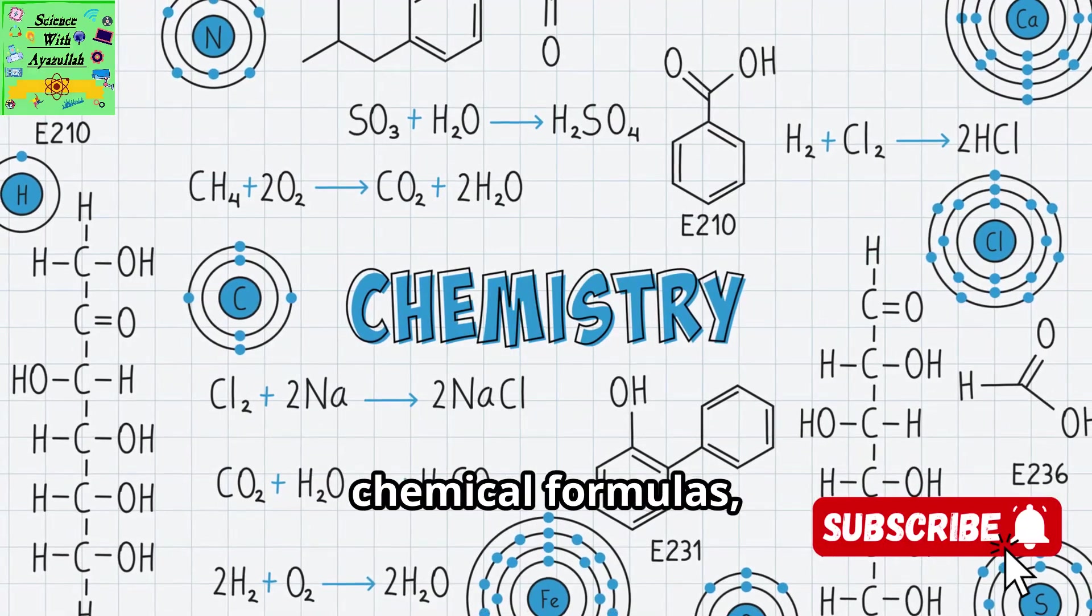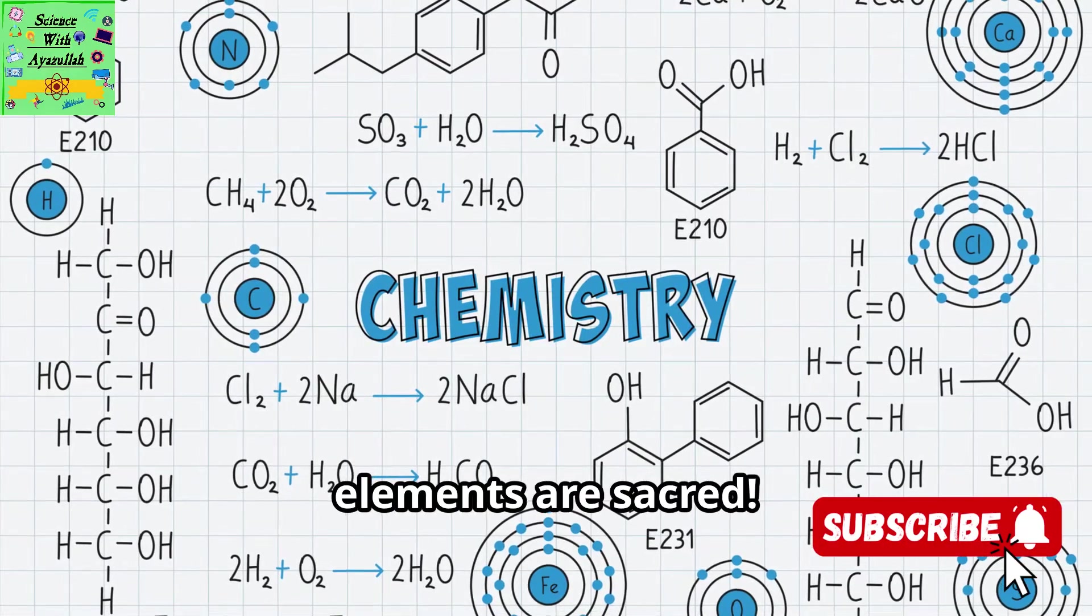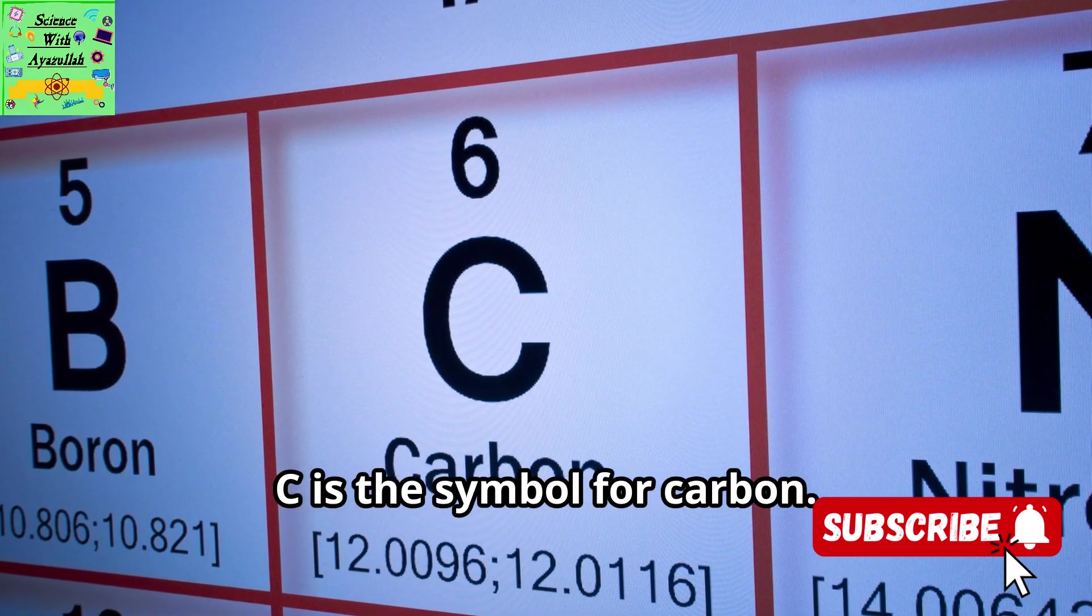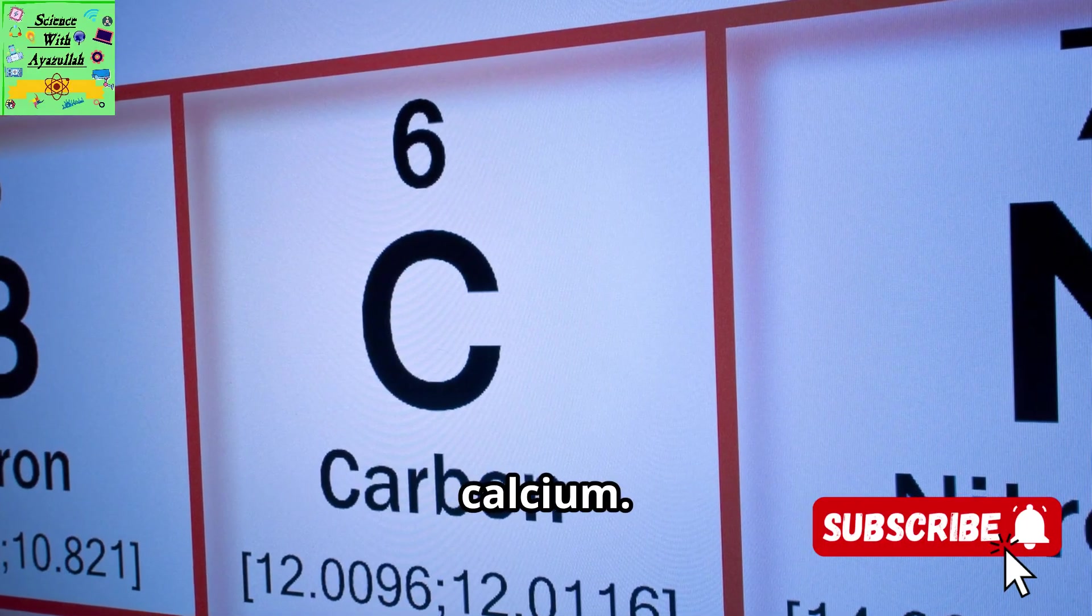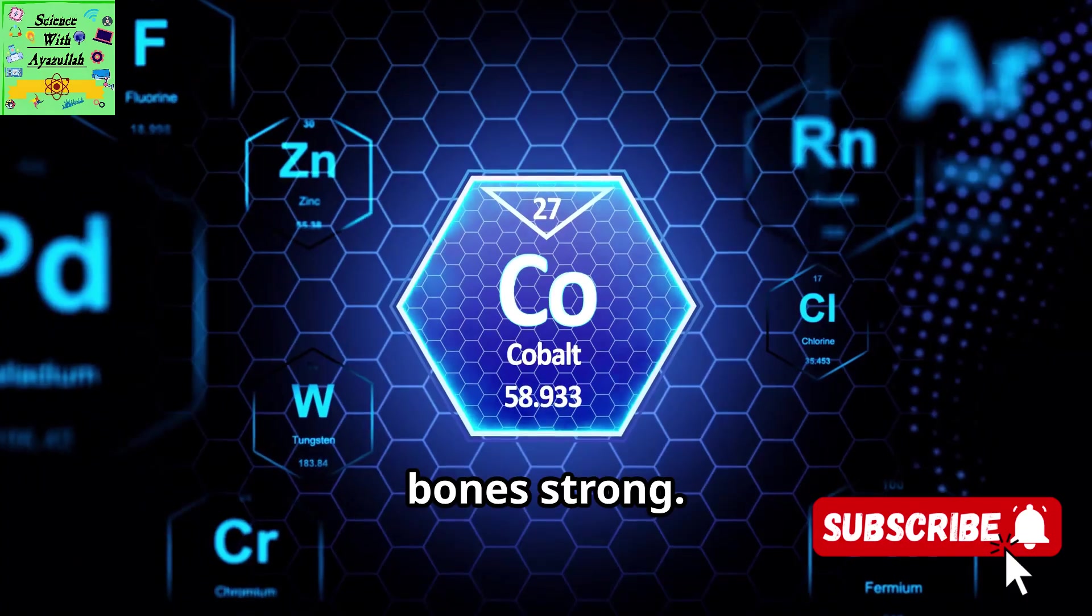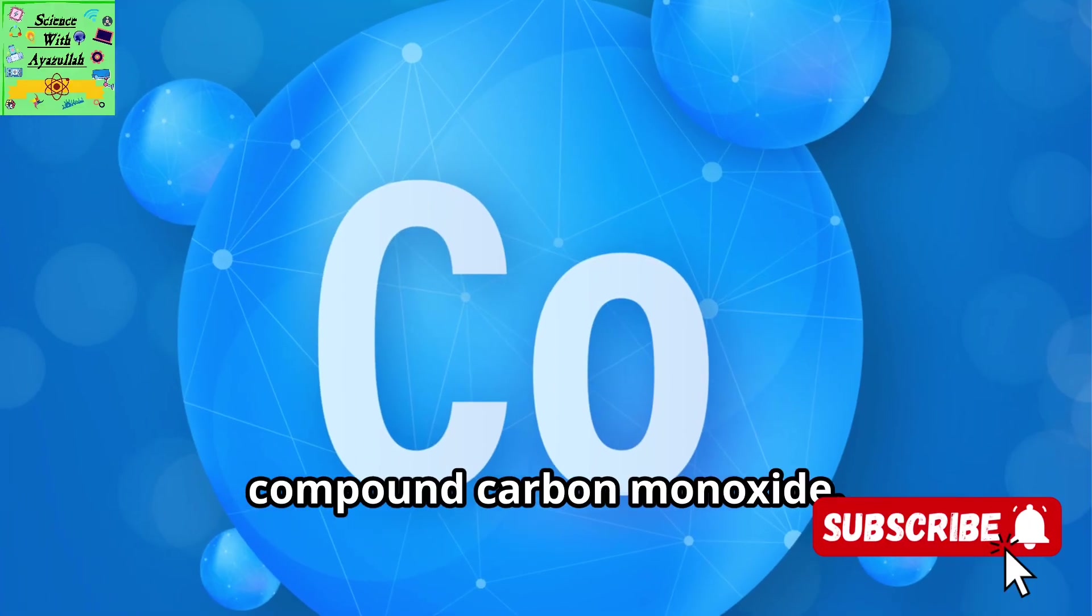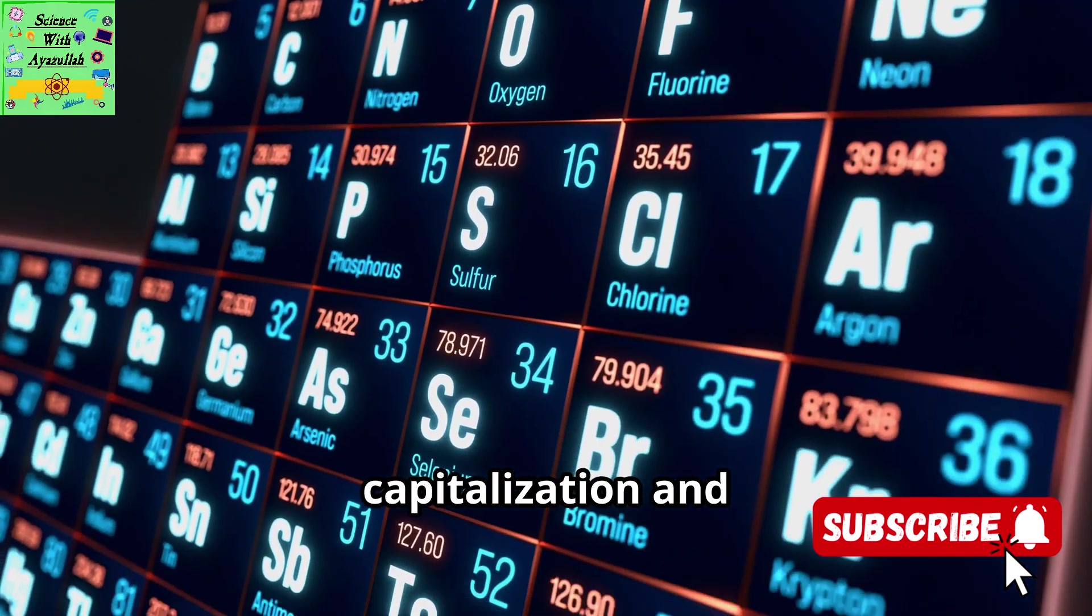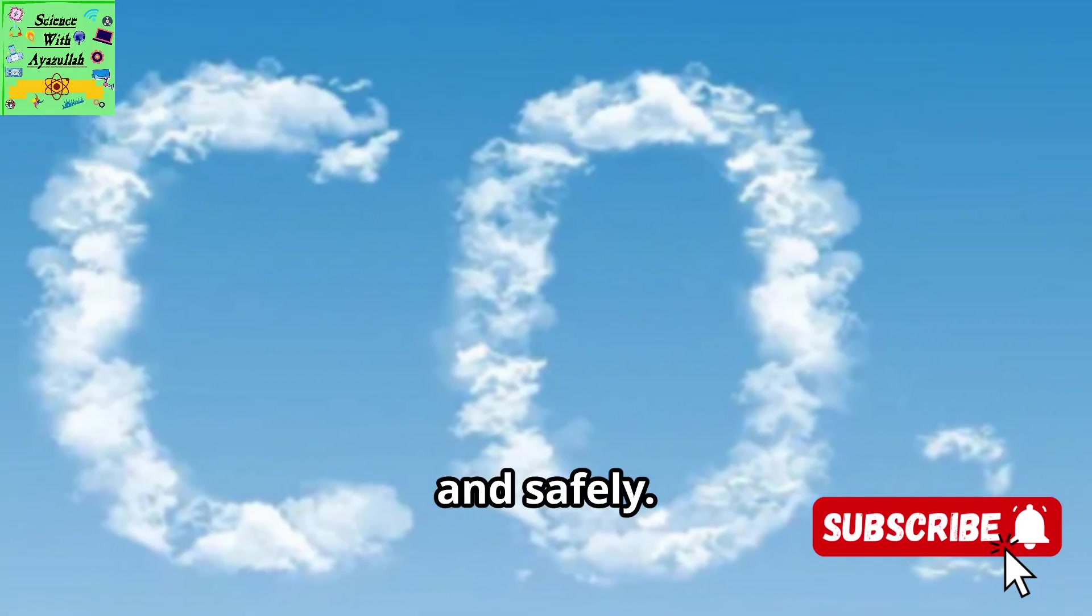Now, as you get into reading and writing chemical formulas, it's very important to be precise. The symbols for elements are sacred. A common mistake for beginners is mixing up symbols that look similar. For example, C is the symbol for carbon, but CA is the symbol for a completely different element, calcium. One is a key component of life and fuels, the other is a metal that makes our bones strong. Likewise, CO is the symbol for the metal cobalt, but CO is the formula for the compound carbon monoxide. That capital O makes all the difference. Paying close attention to capitalization and letters is not just picky. It's essential for doing chemistry correctly and safely.